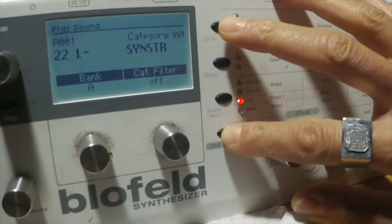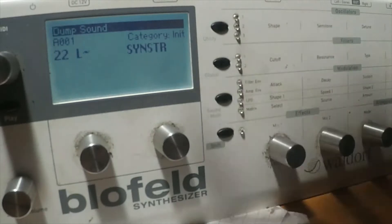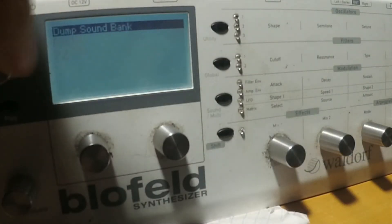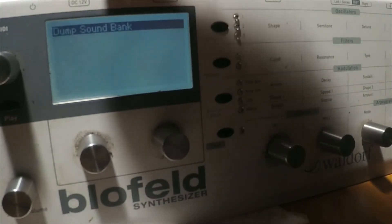Alright, so here's how you do it. You go to Shift Utility, scroll over to either Dump Sound or Dump Sound Bank. That's going to dump whatever bank you're on. Right now I'm on Bank A, so we'll dump that.